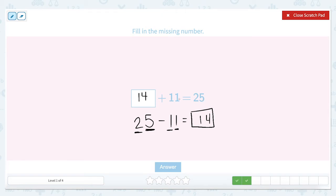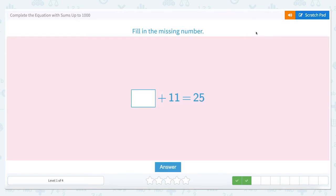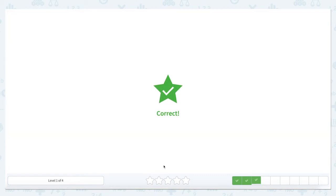So 14 plus 11 equal to 25. 4 ones, 1, 1, 5 ones. 1, 10, 1, 10 equals 2 tens. Yep. So let's type that in. Check our answer. Correct.